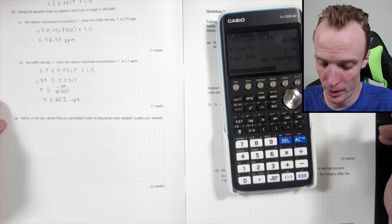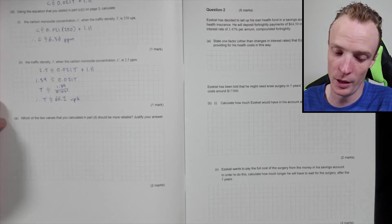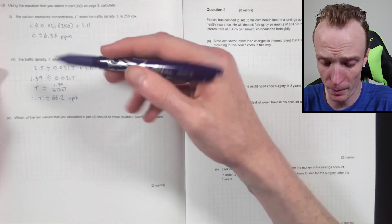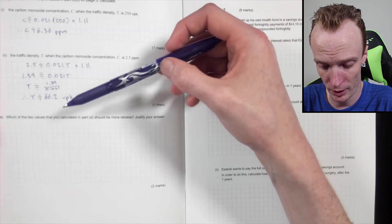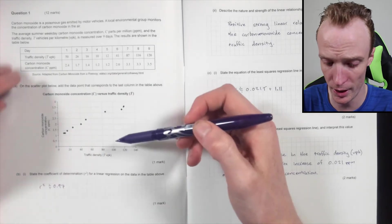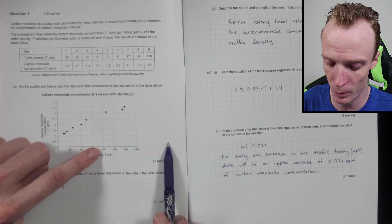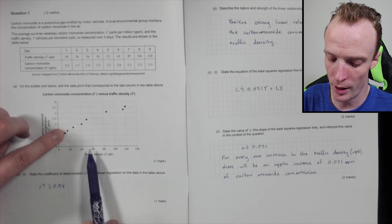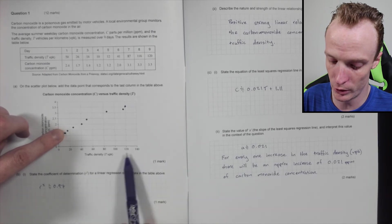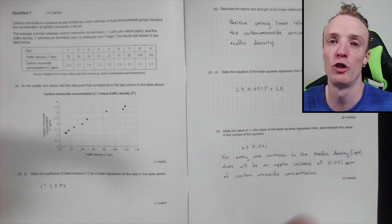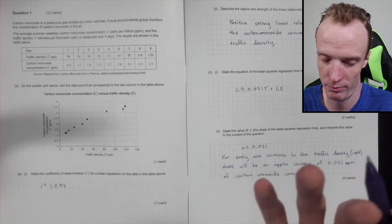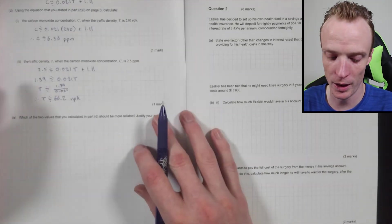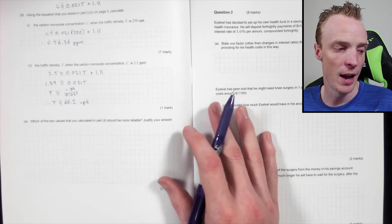So which of these two values that you calculate in part d should be more reliable and justify your answer. So now what we're looking at is really an interpolation versus extrapolation of data sort of question. So when we now look at this, I'm looking at my 66.2 and that was 250. So let's look back over here. 66.2 would have been over here somewhere; 250 would have been out here somewhere. So you can see where my traffic density was 66 point something, it's in between my two poles, so it's interpolation. Where the other one was extrapolation because the traffic density of 250 was out here somewhere. And when you're extrapolating data, you're assuming that the trend is going to continue, which you know may or may not. We've got no evidence to support that. So the interpolation is always going to be more reliable here.